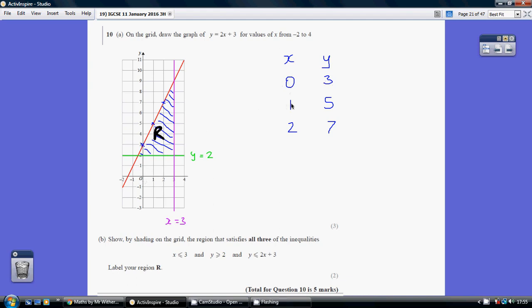Another point: when x is 1, we get 2 lots of 1 is 2, and 3 is 5. So when x is 1, y is 5. We've generated the point 1, 5.